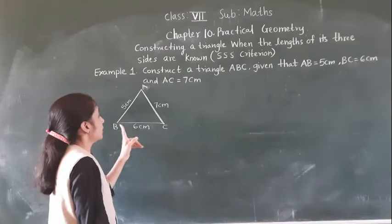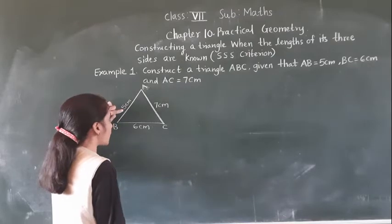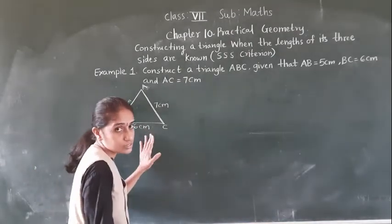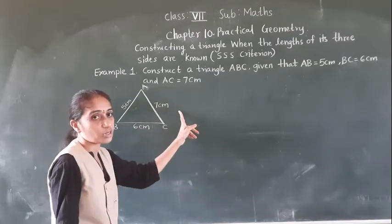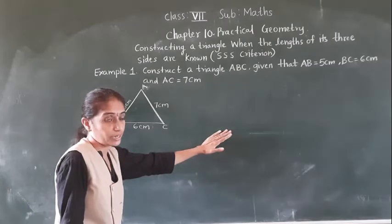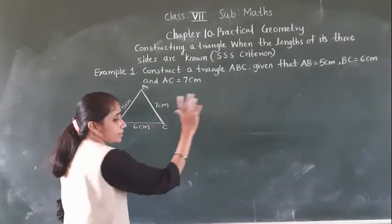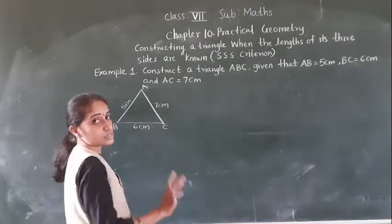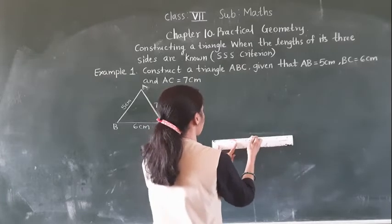So BC is equal to 6 cm, and AC is equal to 7 cm. This is our rough diagram. Now we are going to draw the fair diagram of this triangle. First of all, draw BC of 6 cm. BC — how much is BC given? 6 cm. So draw 6 cm for BC.